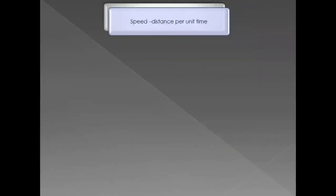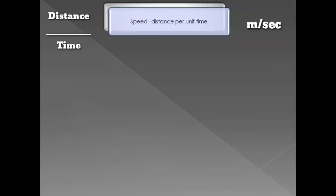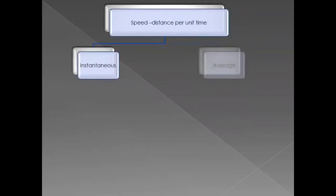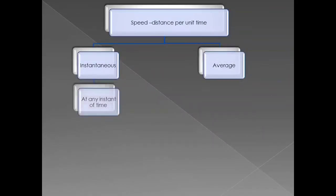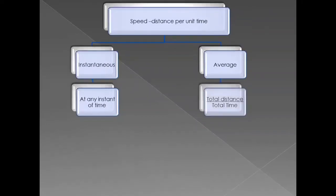Speed is the distance covered by a moving body per unit time. Its formula is distance upon time and its SI unit is meter per second. It can be of two types: average speed and instantaneous speed. Average speed is the total distance covered by a moving body divided by the total time taken to cover this distance.